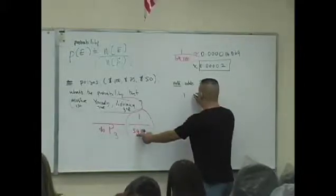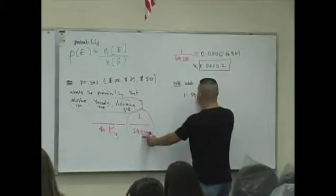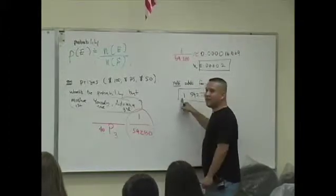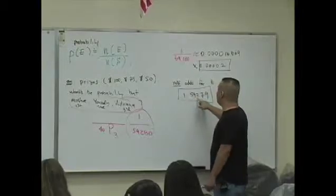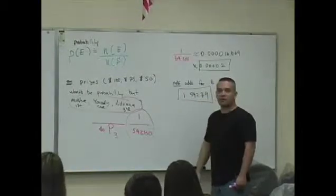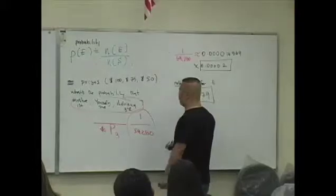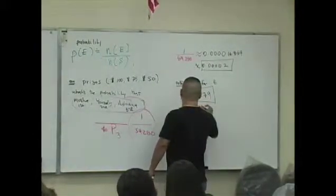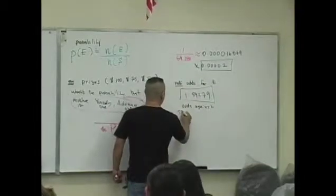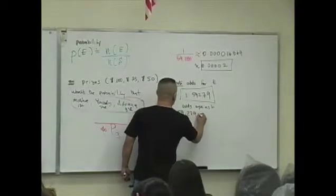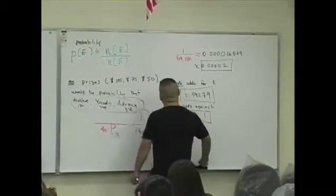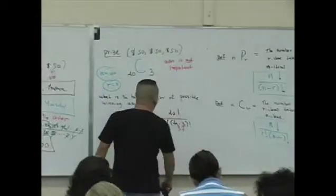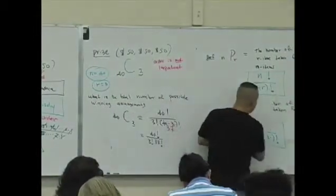There are three winners consisting of Moshi first, Yalzi second, Adriana third. There's one success for every 59,279 failures. What are the odds against this? 59,279 failures to every single success.